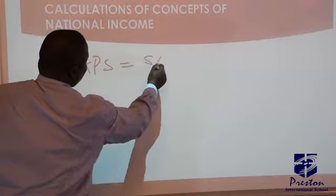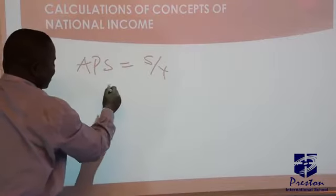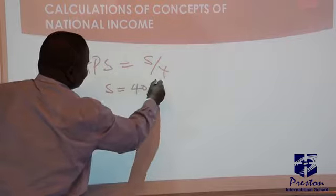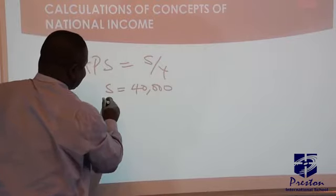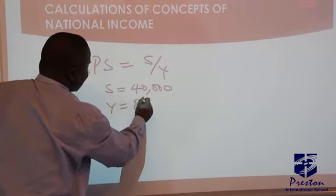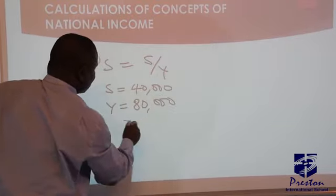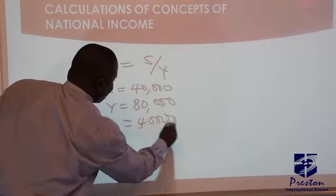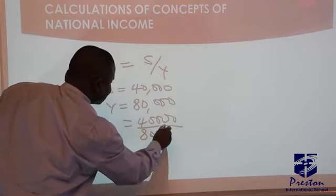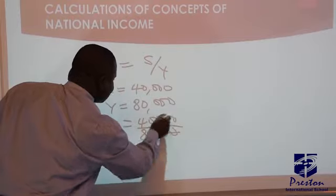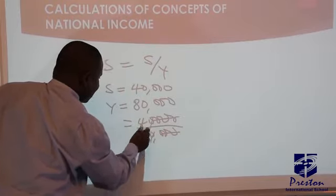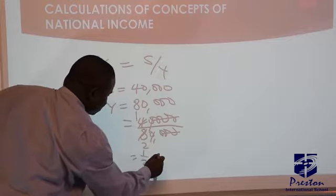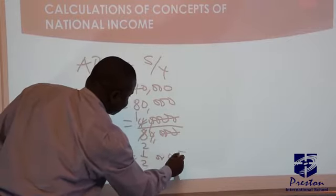The formula for APS is equal to S over Y. Our S is equal to 40,000 naira and our income remains 80,000 naira. So you have 40,000 over 80,000, which gives 1 over 2 or 0.5.